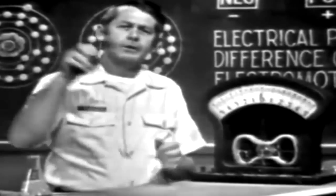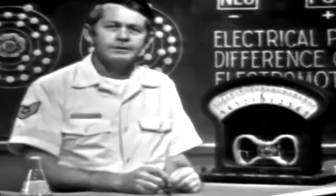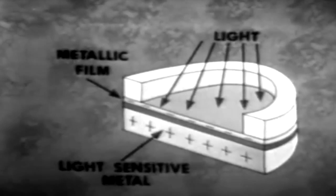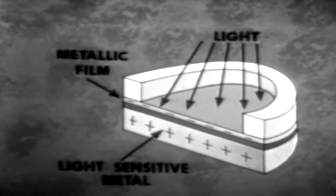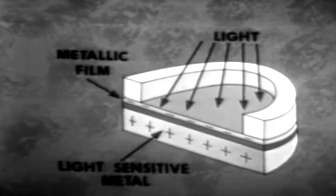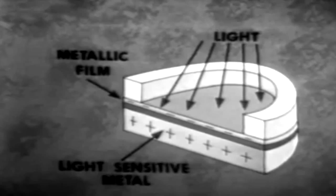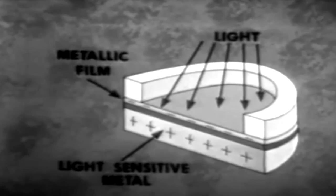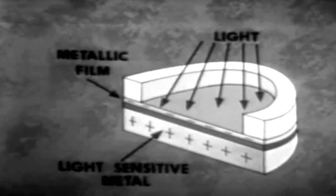A method similar to the thermocouple utilizes light rather than heat to produce a voltage. Now, devices in this category are made up of metals sensitive to light energy. When light strikes the device, electrons in the sensitive metal will become free and will travel to the film. The film gains electrons, therefore, it's a negative charge. The metal lost electrons, so it has a positive charge. Charges have been developed, so voltage exists across the two materials.